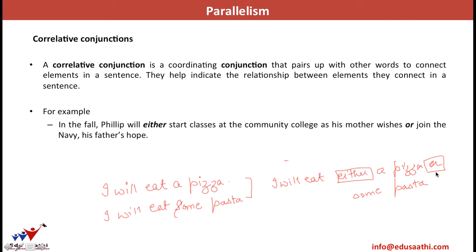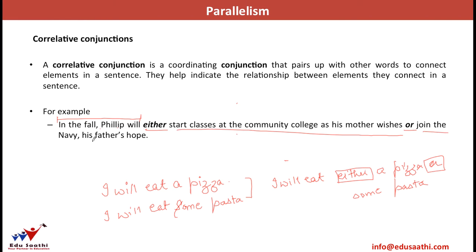For example: 'In the fall, Philip will either start classes at community college as his mother wishes, or join the navy as his father hopes.' The correlative conjunction pair is 'either...or.' To find the two clauses, the part before 'either' — 'In the fall, Philip will' — is common to both. So the first clause is 'In the fall, Philip will start classes at community college as his mother wishes,' and the second is 'In the fall, Philip will join the navy as his father hopes.' We can then check the parallel structure.